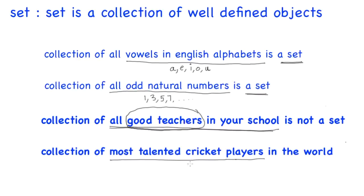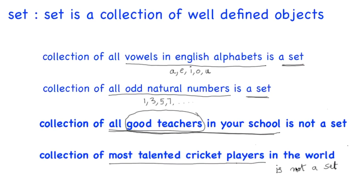Consider the collection of most talented cricket players in the world. What does 'most talented' mean? Best batsman, best bowler, best wicket-keeper, or best records? In what sense can we say a player is most talented? Since it is not well-defined, the collection of most talented cricket players in the world is not a set.